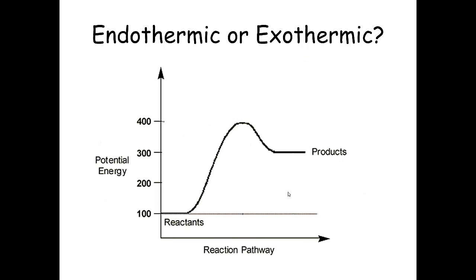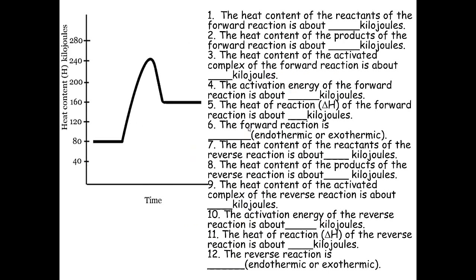How about this one? Looking at it — my reactants are at 100, products are at 300, and here's the activation energy. What I could also ask you is: what is your activation energy, how much energy did it take to climb the hill? I started at 100, up to 400 — your activation energy would be 300. But that's not what I asked. Is it endothermic or exo? Compare — a lot more energy to break the bond, so therefore overall we do say it is endothermic.